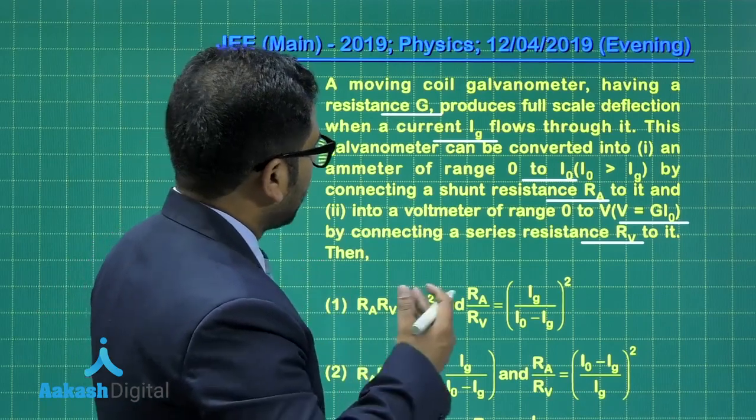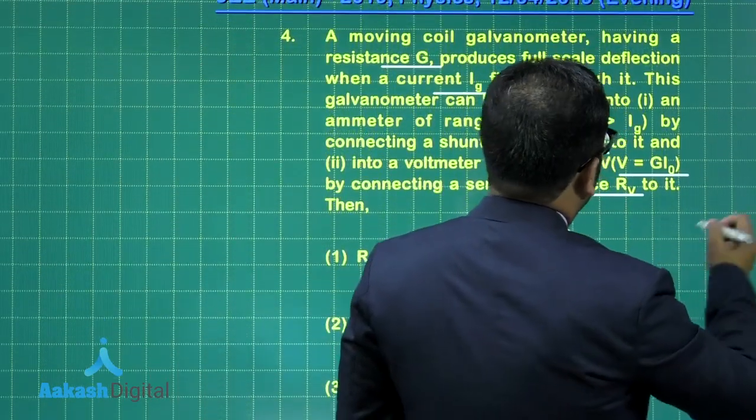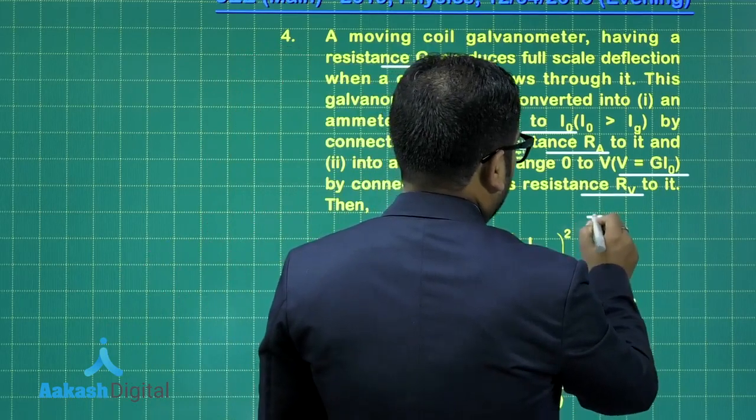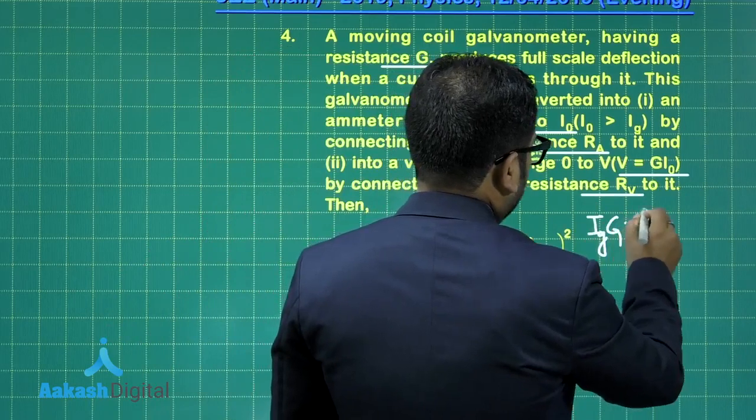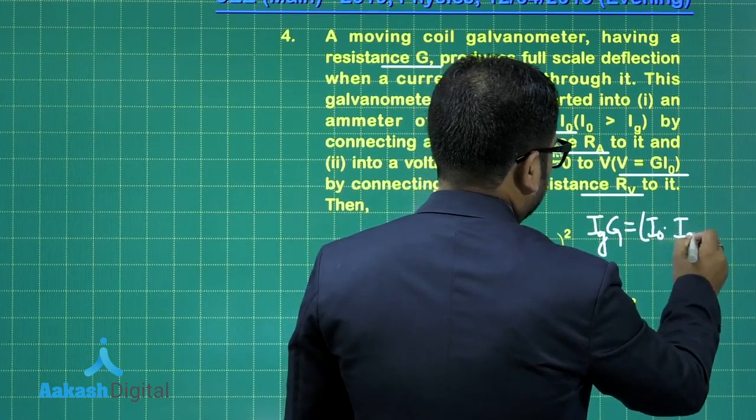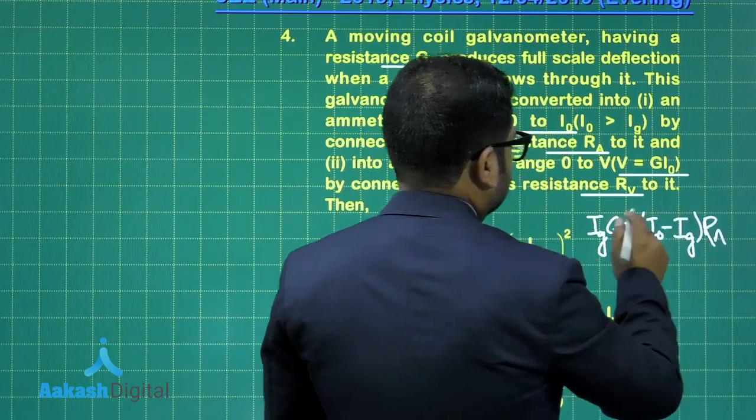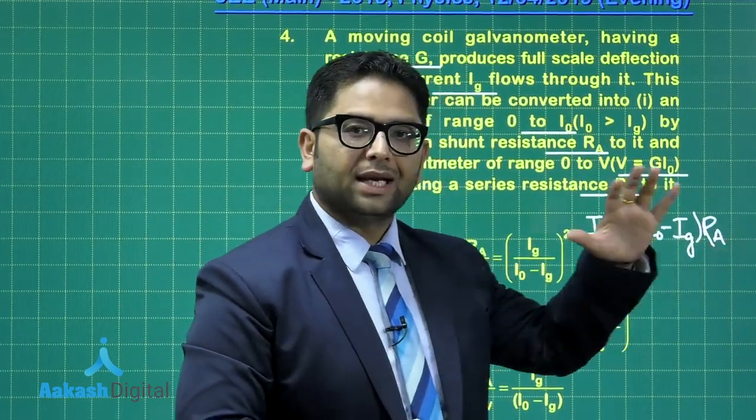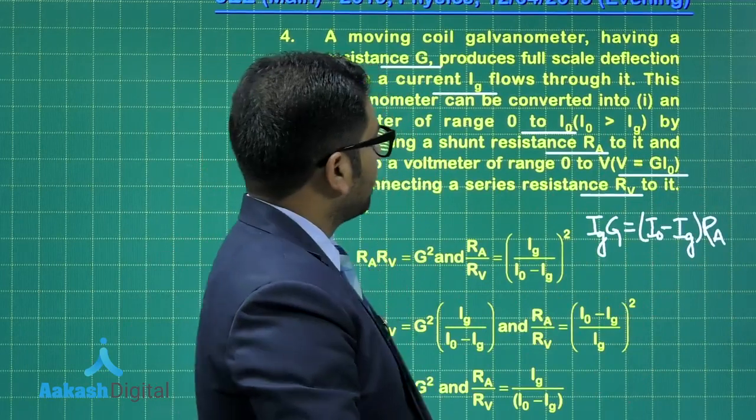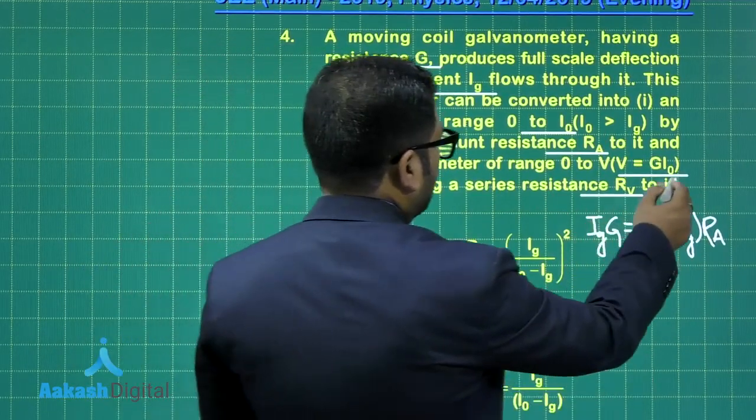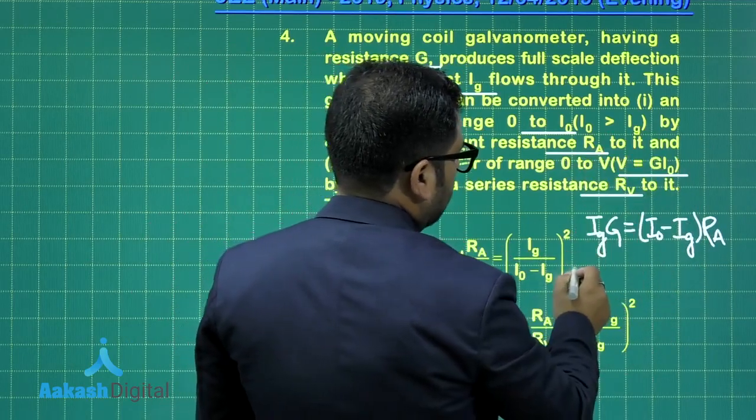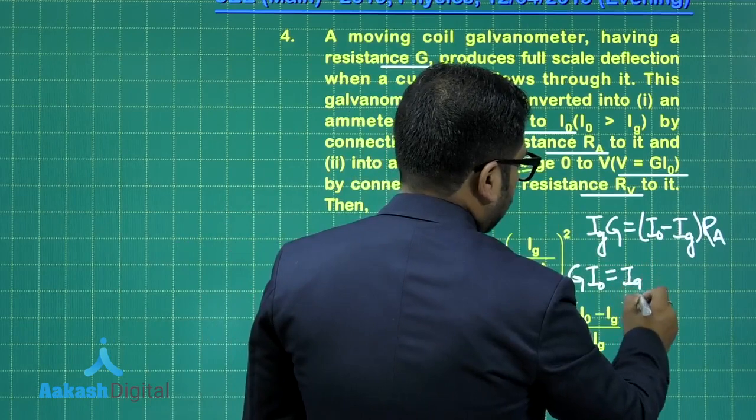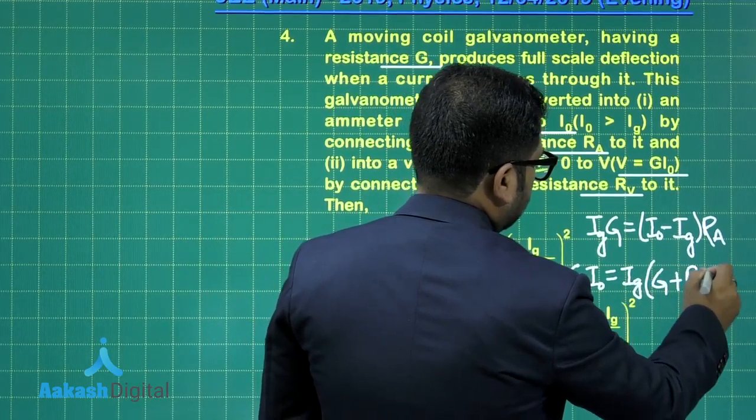Let's start with the solution part. I'll first write the expression when their conversion happens into ammeter. So in that given case, IG multiplied by G is equal to I naught minus IG multiplied by RA. This is the regular practice that we do whenever we convert the galvanometer of range IG into an ammeter of range I naught, the regular expression. The second time, we are converting it into a voltmeter of this range. So that is going to have G I naught is the new range, and that will be equal to IG multiplied by G plus RV. That's all. Straightforward.